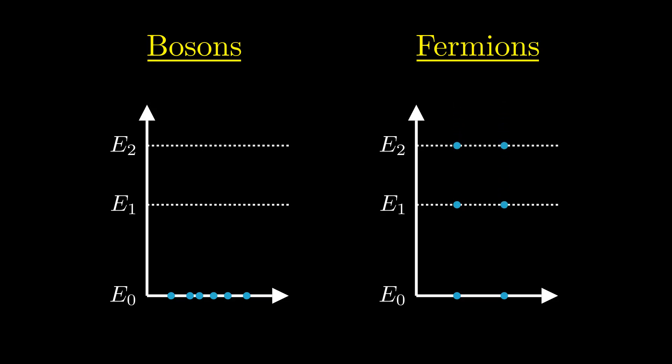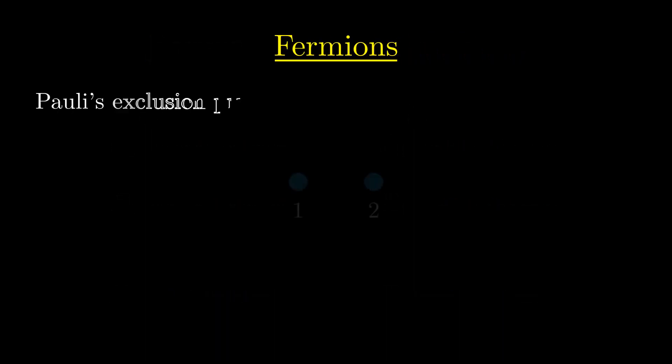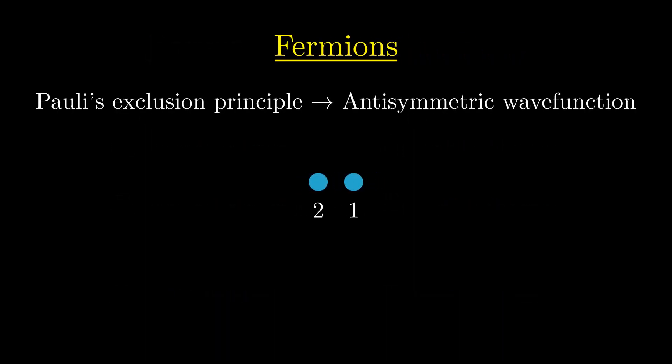To realize this in a multiparticle wavefunction, the only thing we need to require is that the wavefunction is anti-symmetric with respect to switching two of its particles. To see why this is the case, let's write down the requirement for a two-particle wavefunction.